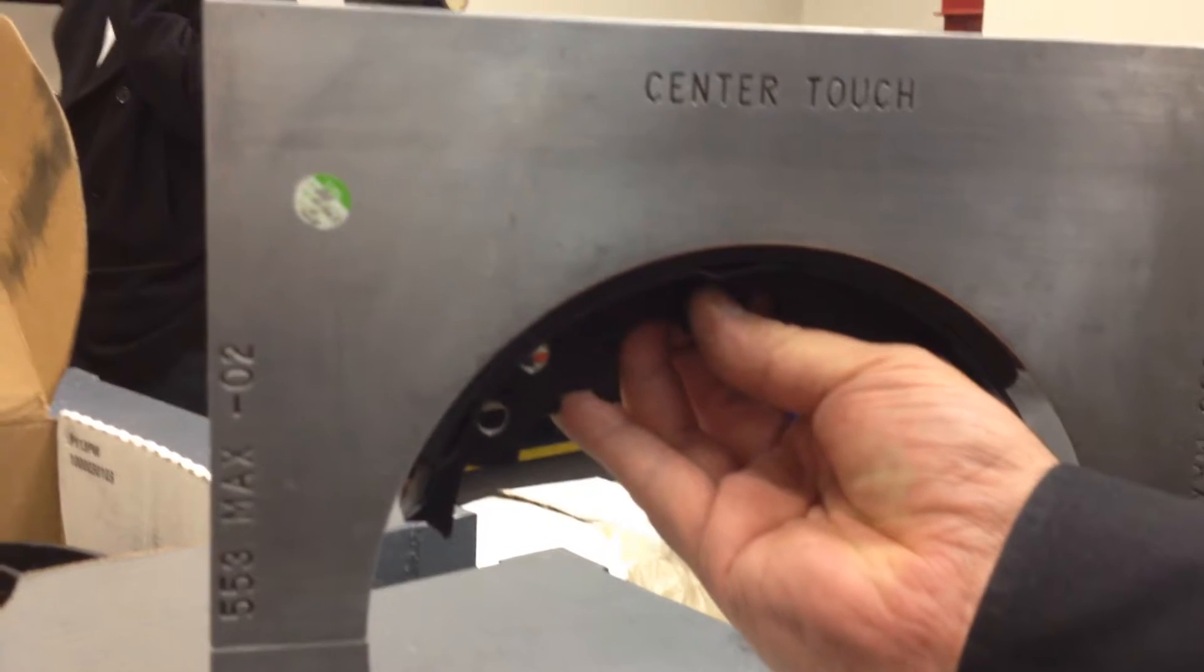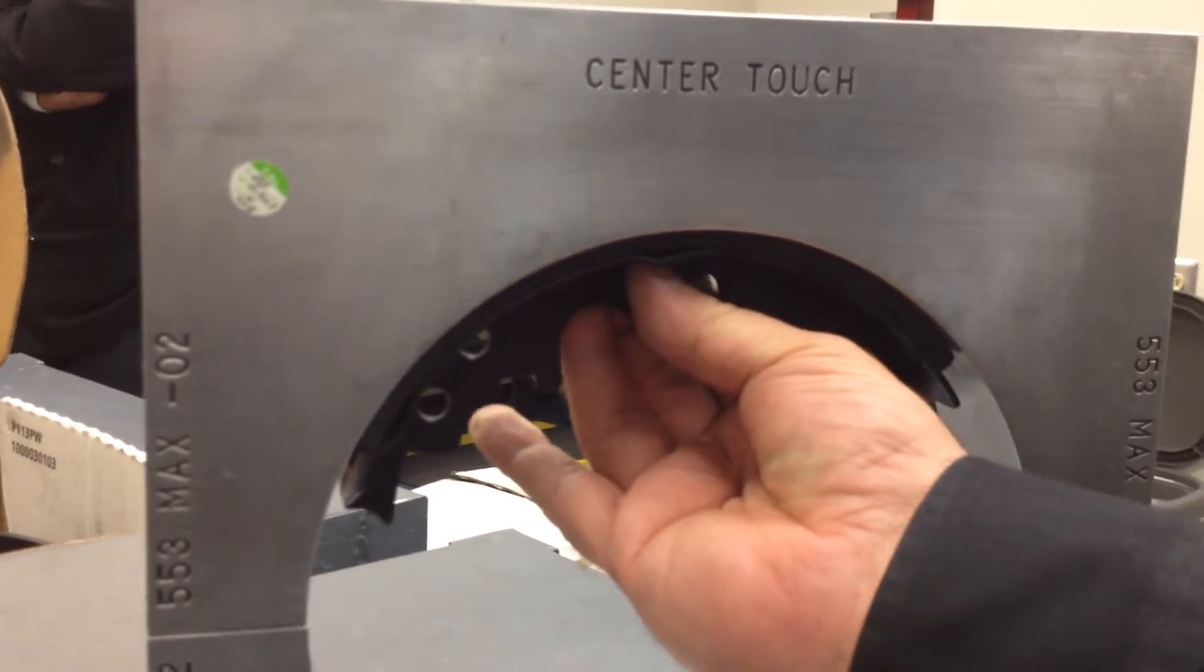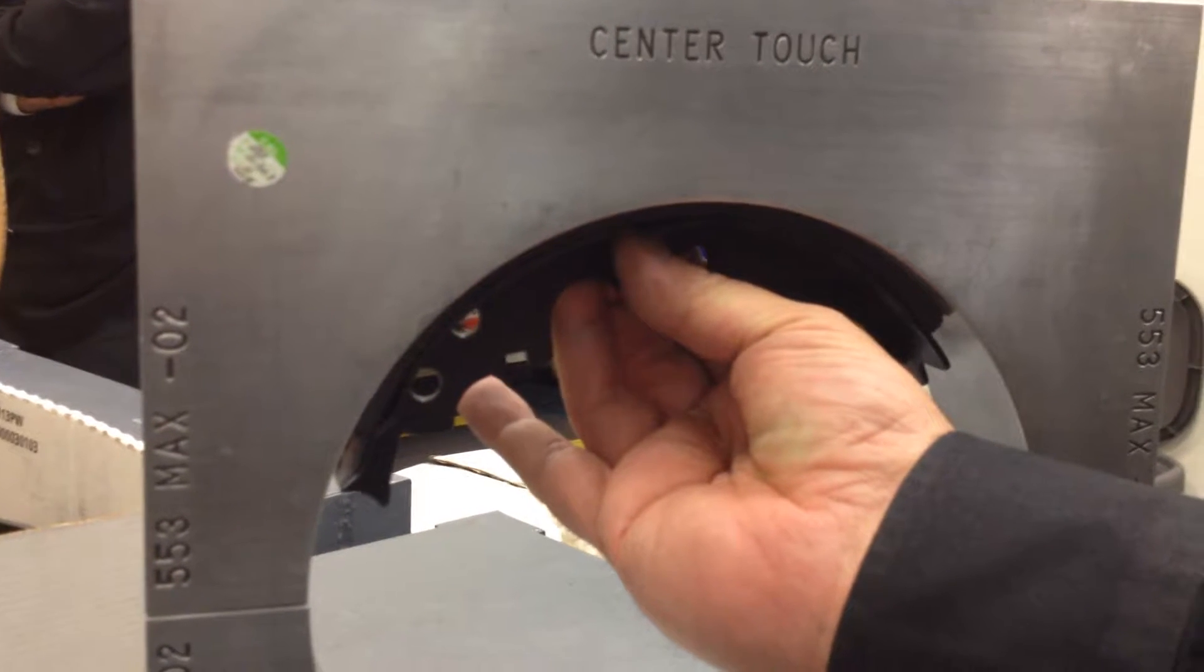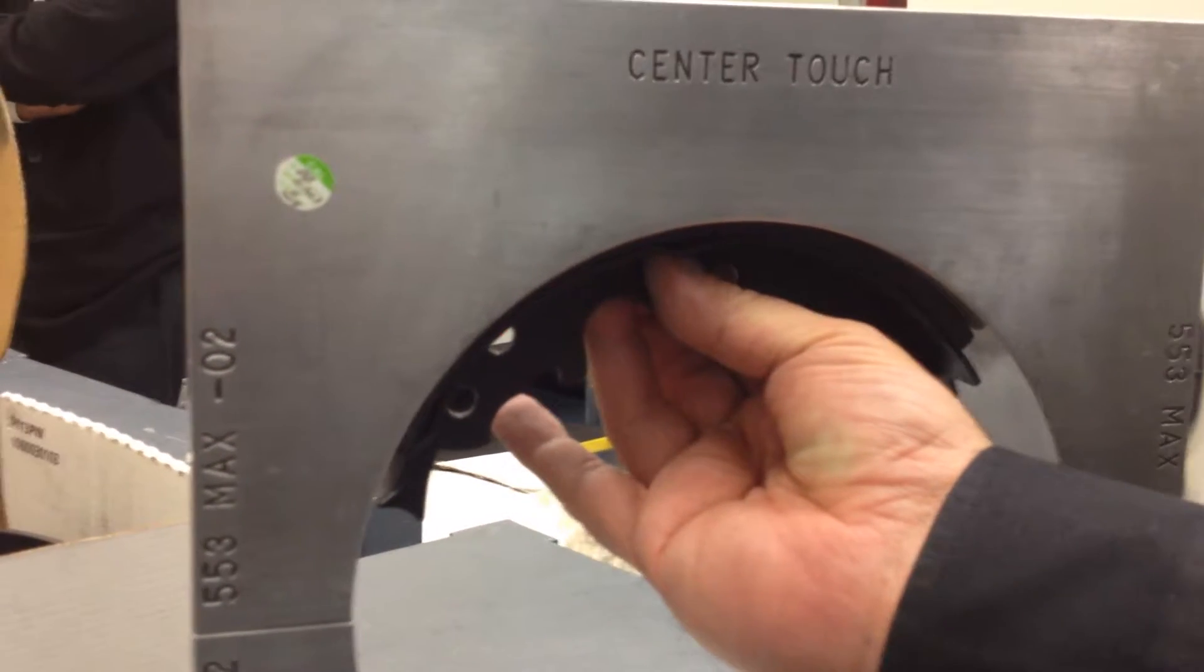But if you wiggle it, you're going to see that there's actually some movement on the ends by twisting it back and forth. You can feel the axis of rotation is the center.